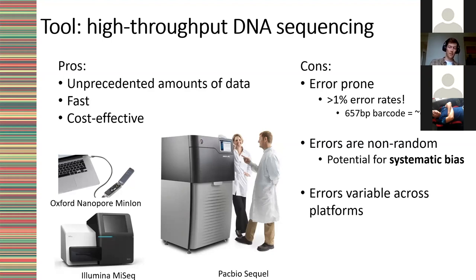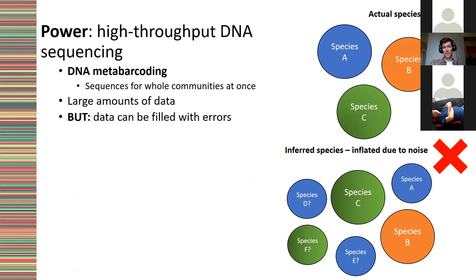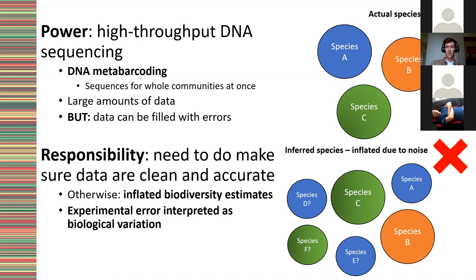We want to get the biological signal and separate it from the sequencing noise — this is called denoising. We have the power to get a lot of information, but since the data can be filled with errors we might get inflated estimates of biodiversity. In metabarcoding, where we're extracting DNA sequences in bulk from all members of a community, if we don't remove the error introduced by DNA sequencers we might overestimate the number of species present. We have a responsibility to make sure our data are clean and accurate, otherwise we'll inflate these estimates and interpret noise as signal.